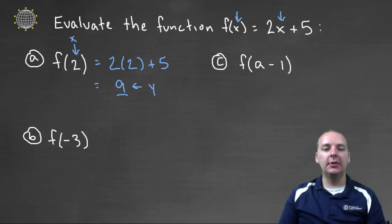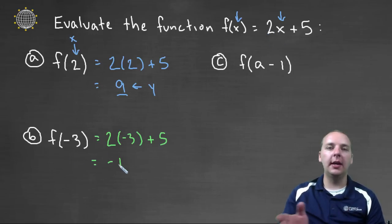Alright let's try this again. Let's do f of negative three, evaluate the function when x is negative three. We'll take the x out and replace it with a negative three. So we'd have two times negative three plus five. Two times negative three is negative six, and negative six plus five makes negative one. So another point on the graph of this linear function would be negative three comma negative one. That's an x, y value.